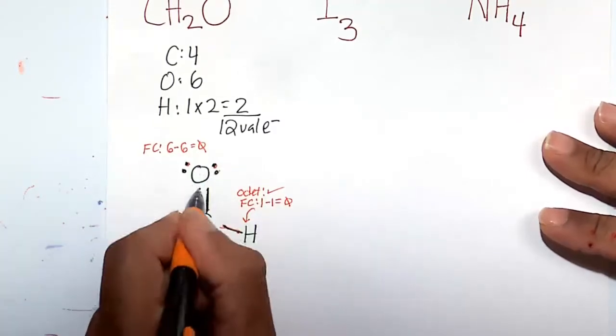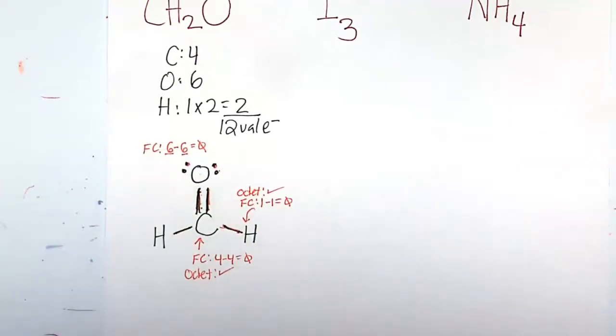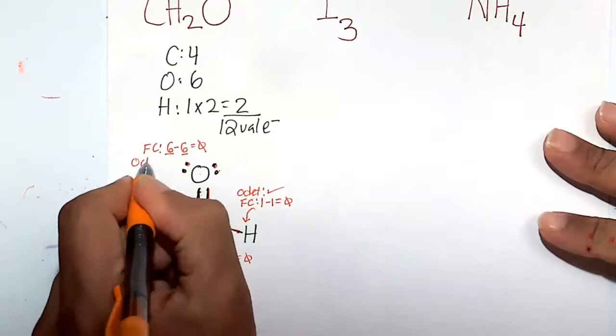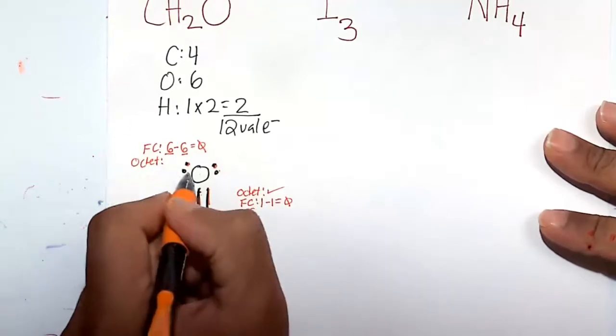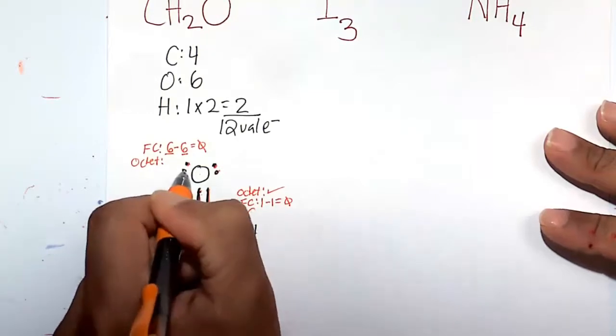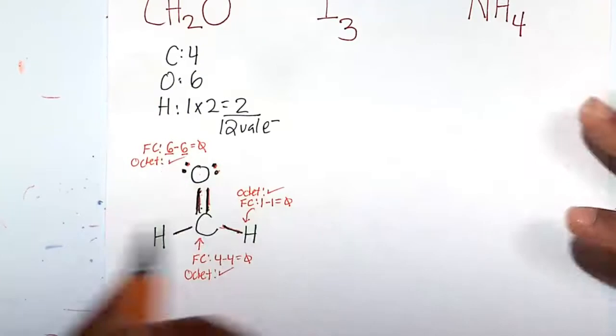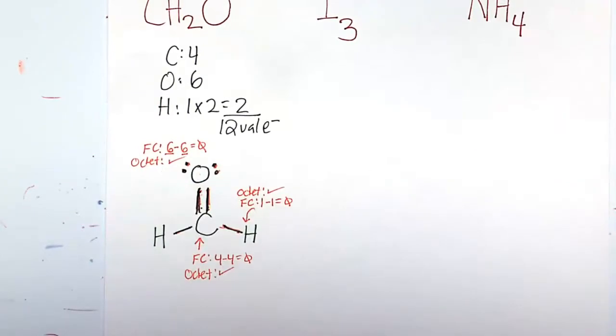Again, counting the oxygen: 1, 2, 3, 4, 5, 6. Oxygen happy at 6. 6 minus 6 is 0. Octet rule - here we're going to count everything individually: 1, 2, 3, 4, 5, 6, 7, 8. So this oxygen atom satisfies the octet rule.